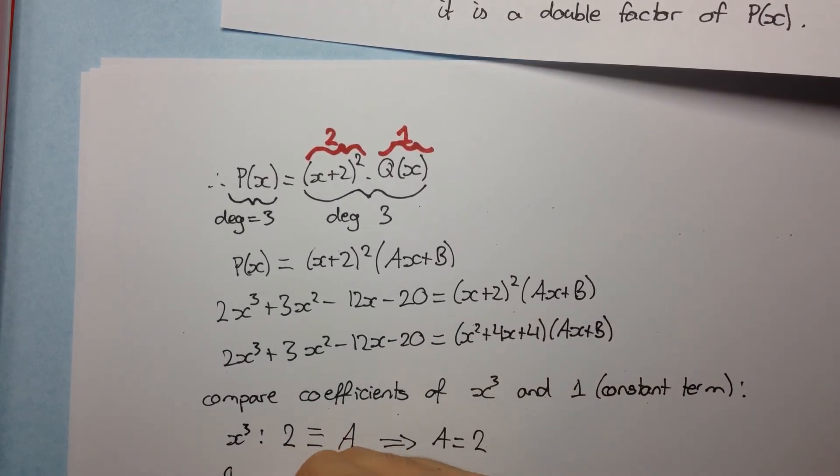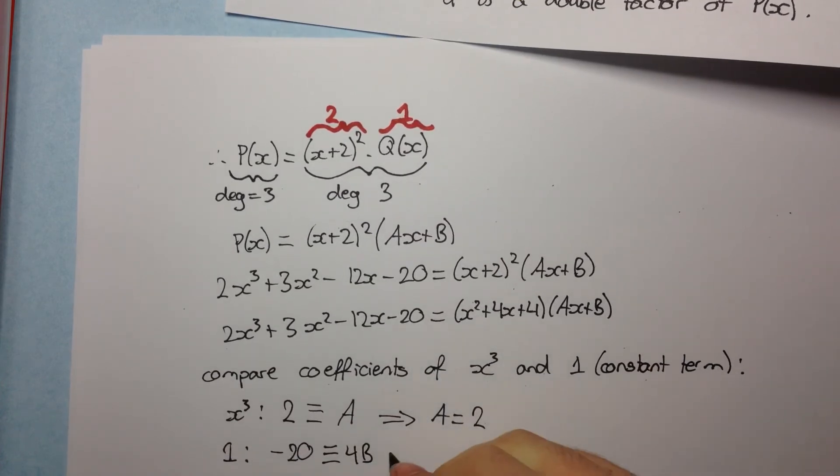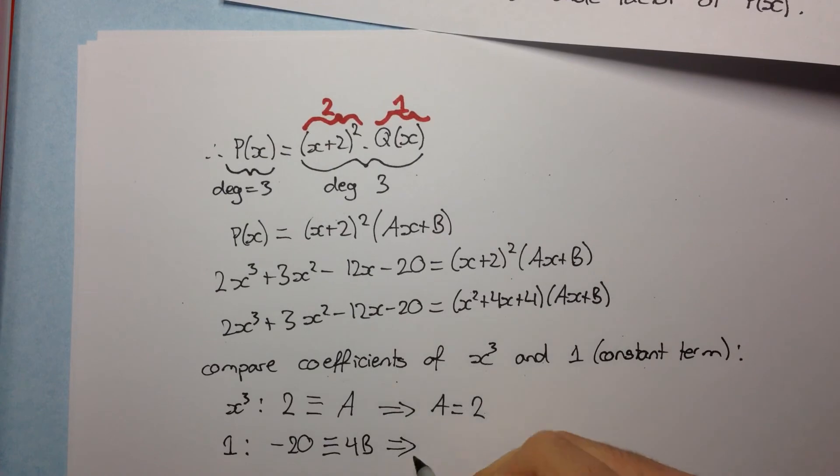Now if we look at the constant term, or the coefficient of 1, we get from the left-hand side, -20, must be identical to... Now where do we get the constant term? We get it from 4 times B. So we get 4B. And that tells us that B is equal to -5.